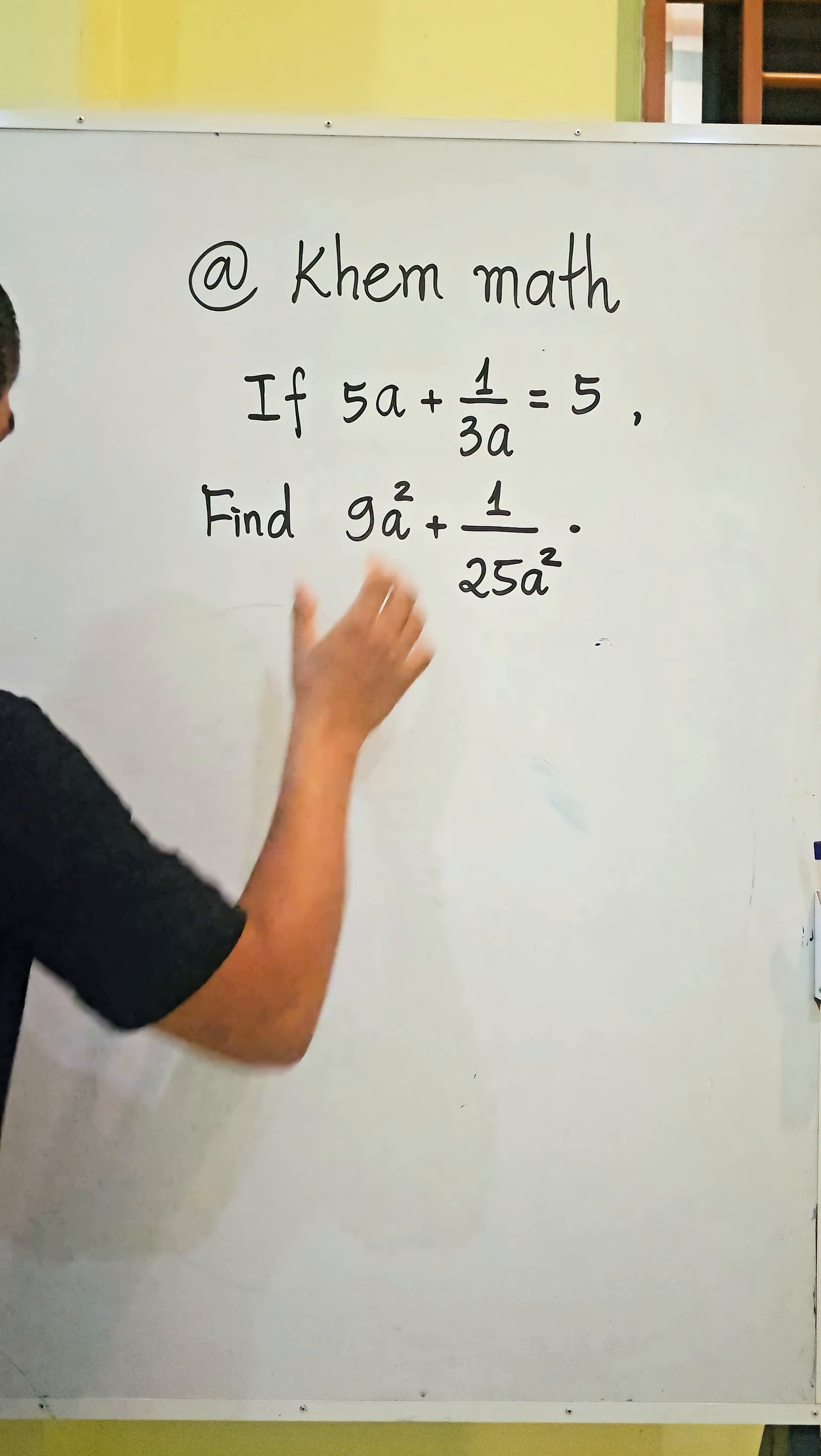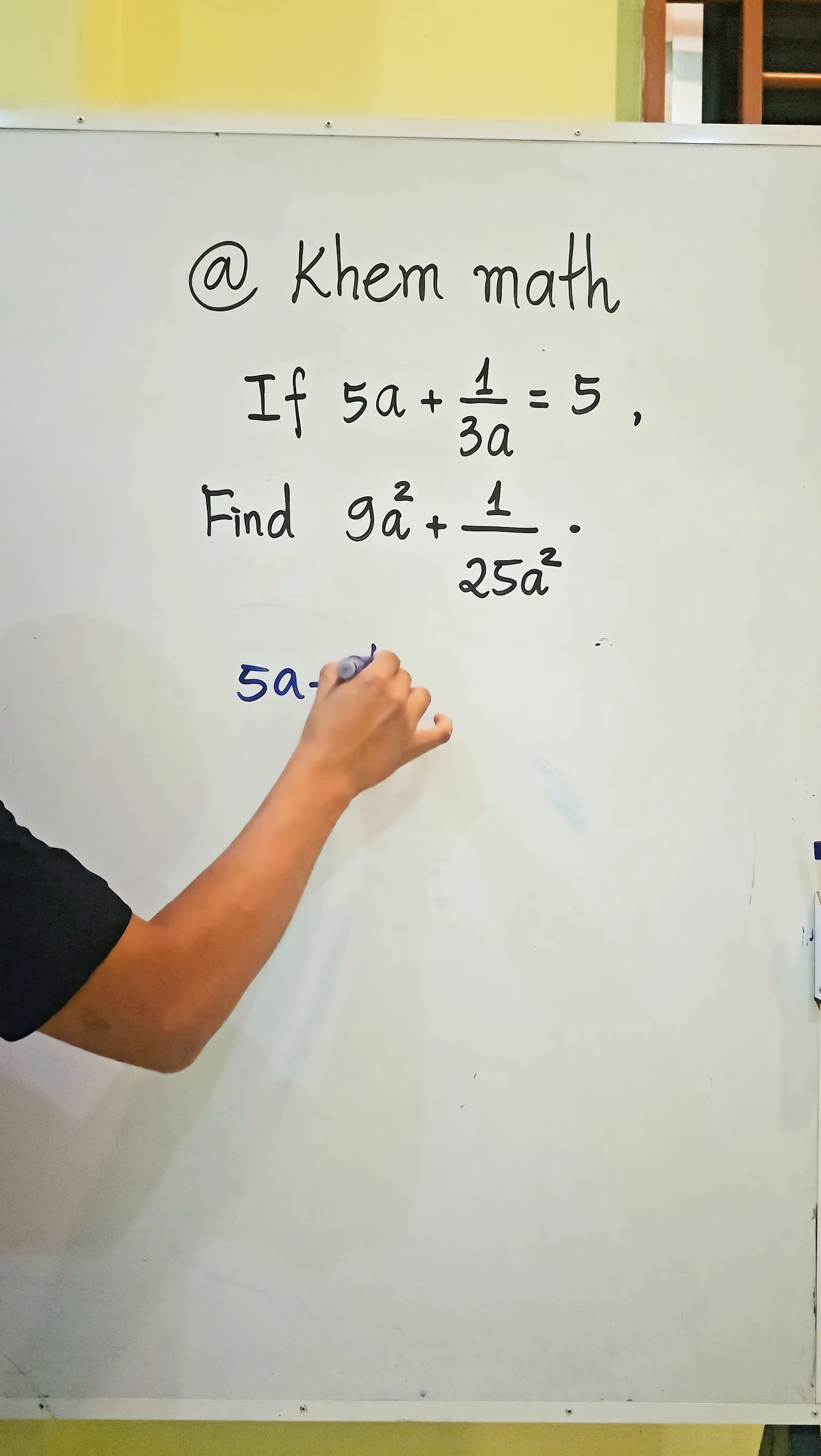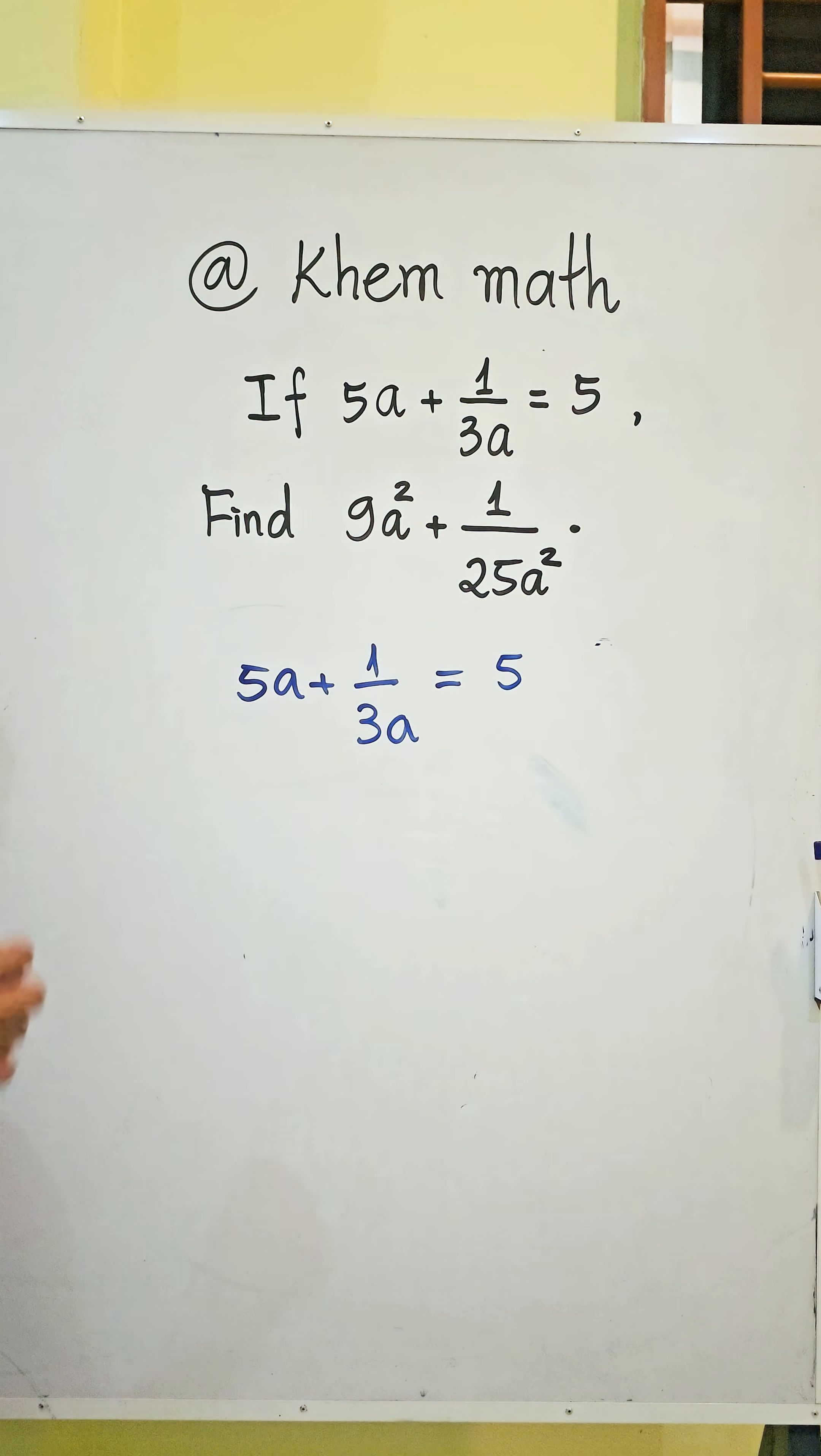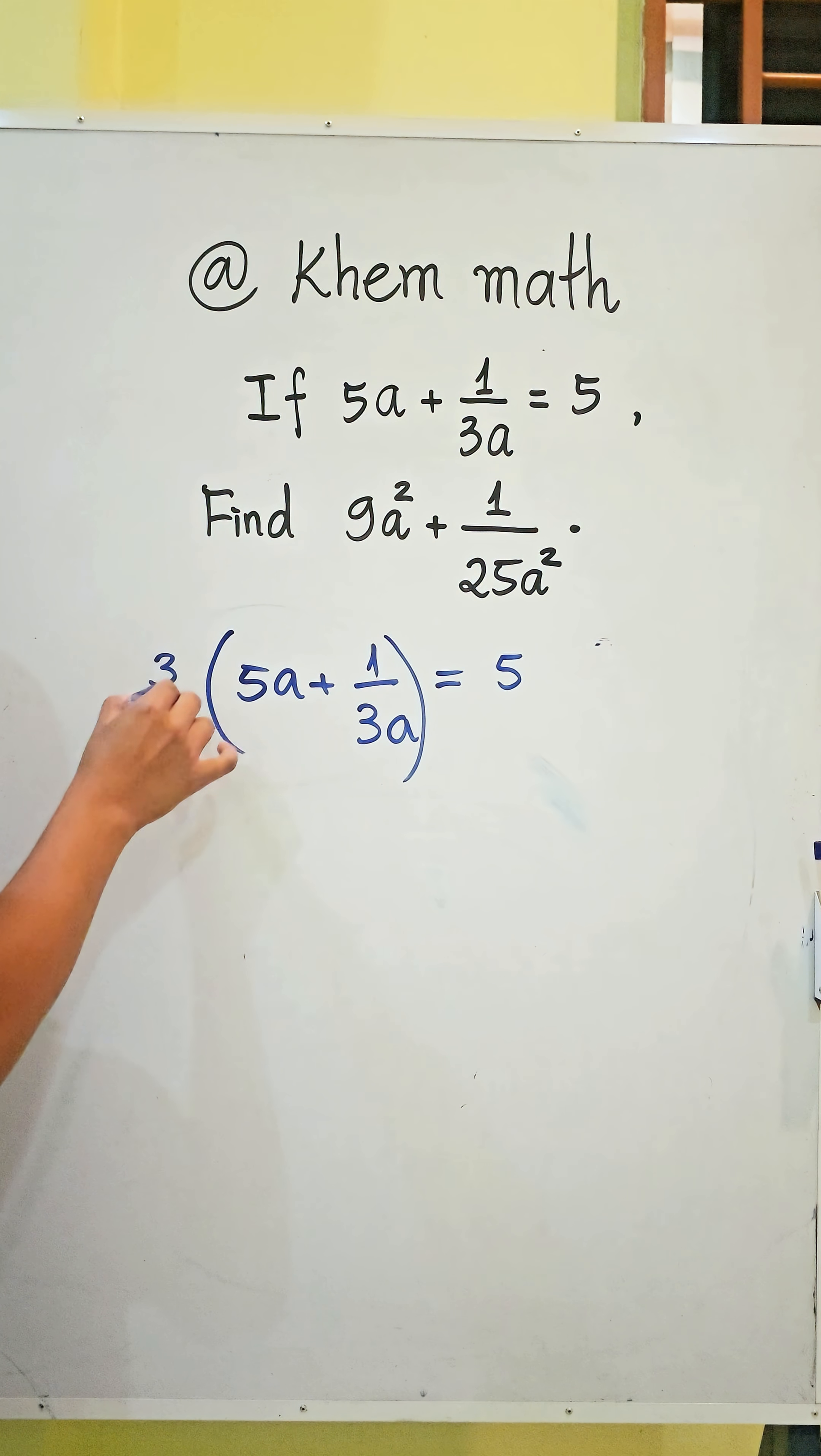The first step, we use this equation here: 5a plus 1 divided by 3a equals 5. First step, we multiply both sides of this equation with 3 divided by 5.